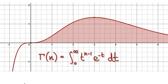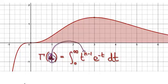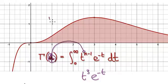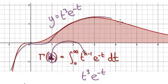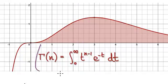In this video, we're going to look at the famous gamma function. This graph here is a special case for when n equals 4. So when you put 4 into here, it will give you t to the power of 3 times e to the power of negative t. If you plot y equals t to the power of 3 times e to the power of negative t, it will give you this graph here — the famous gamma function.